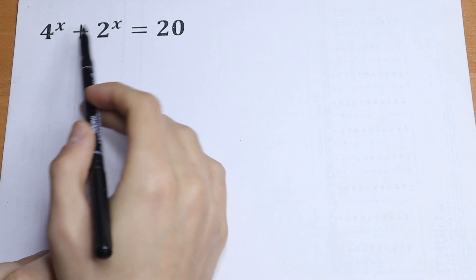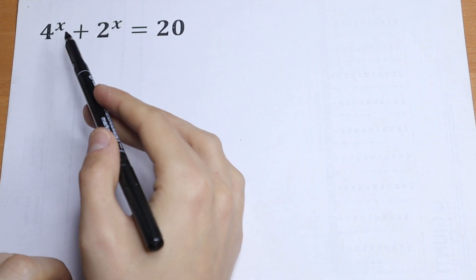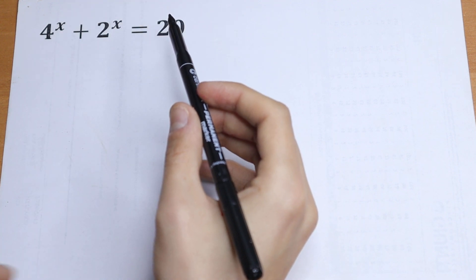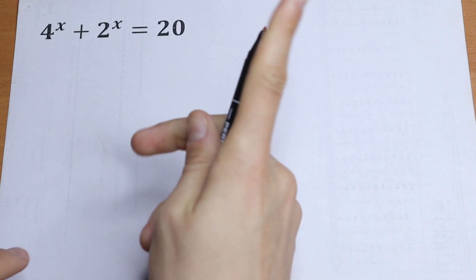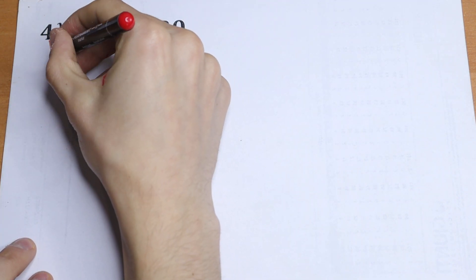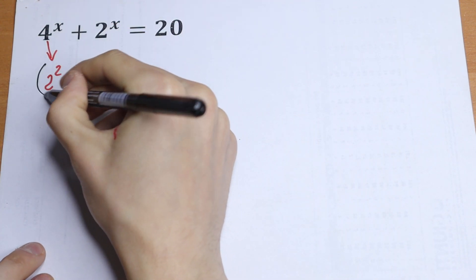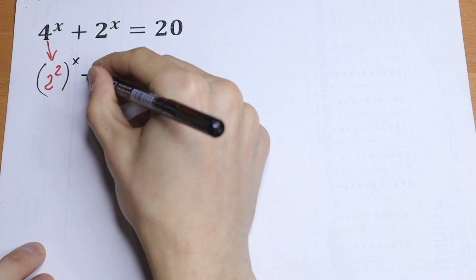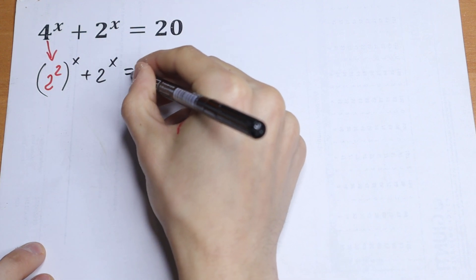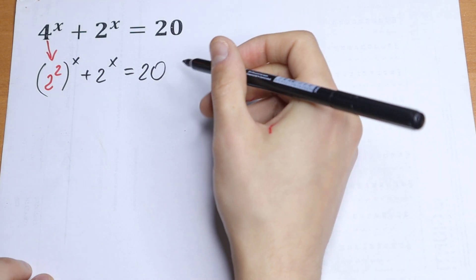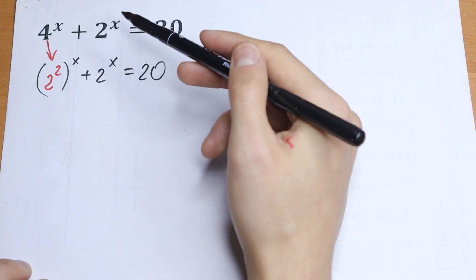First of all, we can express this 4 as 2 squared and then we have the same basis. So let's do this. Let's express this 4 as 2 squared. So we will have 2 squared, but of course raised to the power x, plus 2 to the power x equals 20. Nothing hard, just write this 4 as 2 squared.